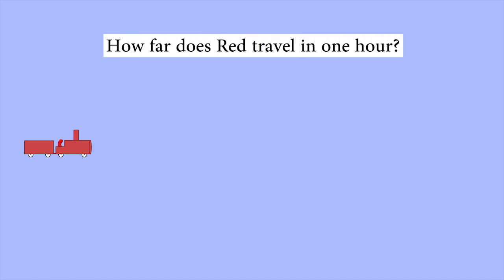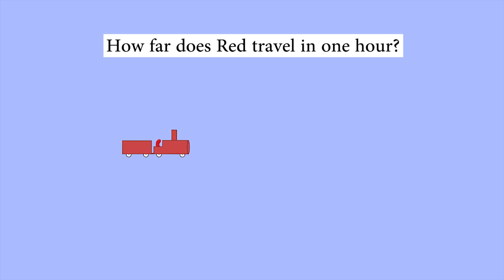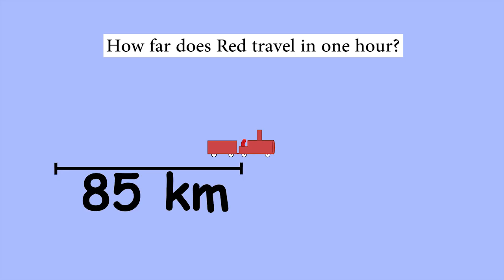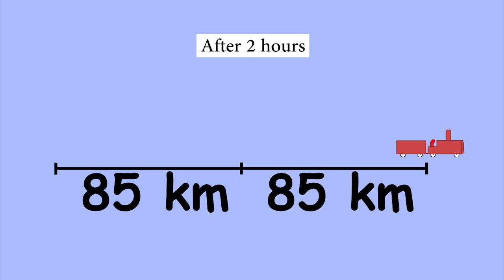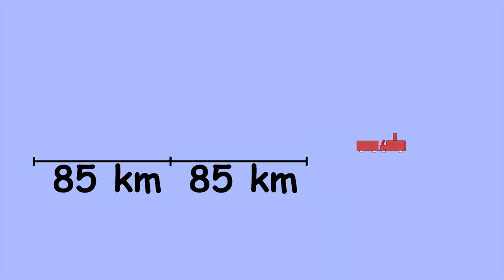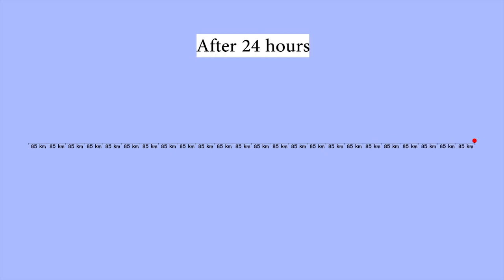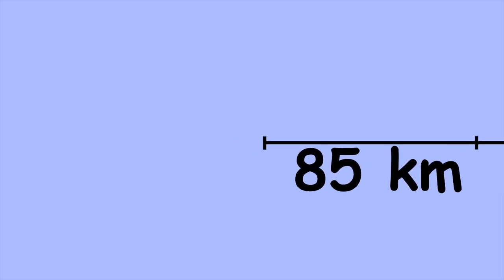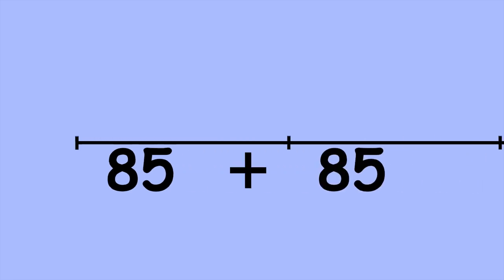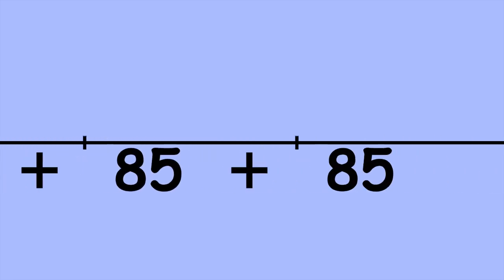One way is to think about how far Red travels in one hour and use this to draw a diagram. If Red travels at 85 kilometres an hour, in one hour he covers a distance of 85 kilometres. Then he travels another hour, so we add another 85 kilometres, then another hour and another 85 kilometres. We have to repeat this process 24 times, because that's the number of hours he spends travelling. To get the total distance travelled, we could add up all those individual distances — 85 plus 85 plus 85, and so on, 24 times.